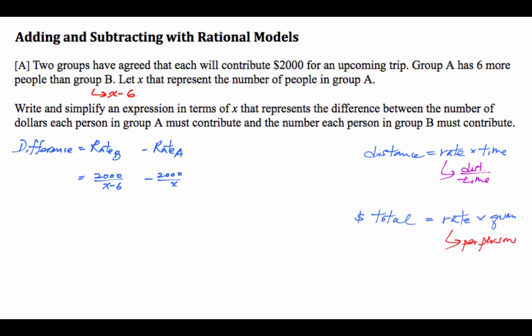Once you put that as an expression, it looks exactly like what we did before. It's just subtracting two fractions. So to get the common denominator, the first one you multiply by x over x. The second one, x minus 6 over x minus 6. Expand that out, and we end up with this.